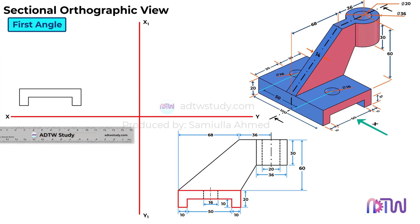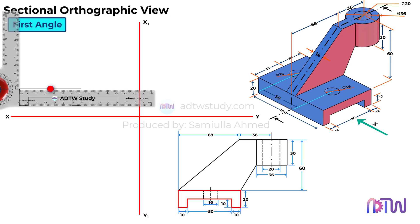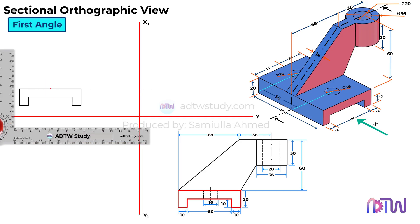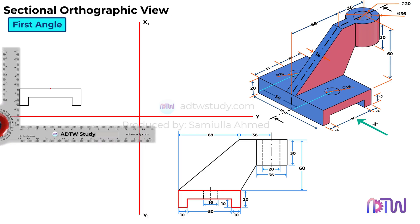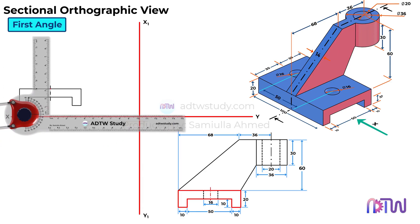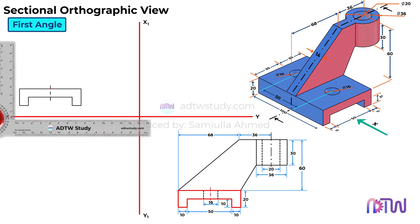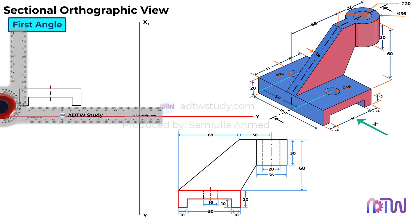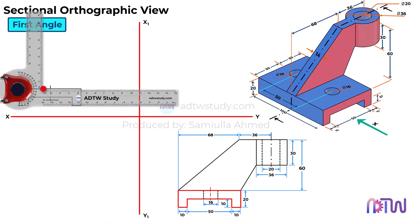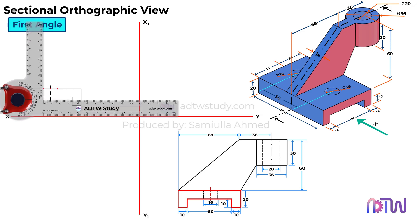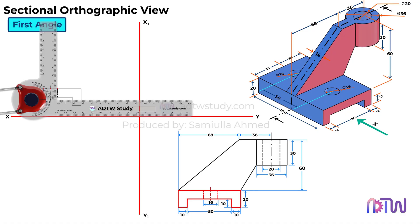Now, we can see that the base has two holes. Since these holes are not visible from the front view, we need to represent them using dotted lines. To do this, take a ruler and mark 35 mm from one of the sides. At this point, draw an axis line, which represents the center of the hole. The width of the hole is 16 mm, so mark 8 mm on either side of the axis line. Finally, draw the dotted lines to indicate the hidden holes present in the base.